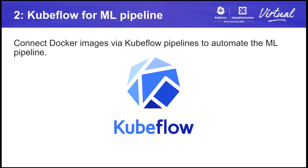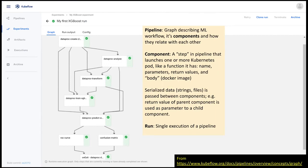Step two: you want to automate your machine learning process. For this, we use Kubeflow Pipelines. In Kubeflow, a pipeline is a graph describing a complete machine learning workflow. This graph specifies what components to run and how they relate to each other. Each component or step in the pipeline launches one or more Kubernetes pods and acts like a function in that it has a name, parameters, return values, and a body — i.e., Docker containers. In this scheme, data is passed between parent components and children ones via serialized data.